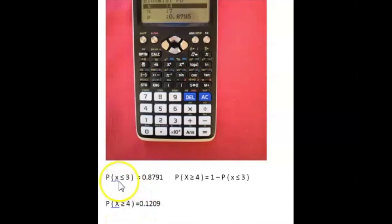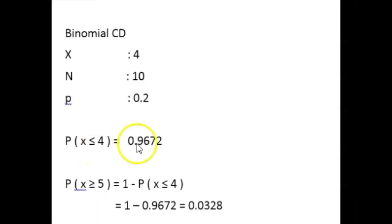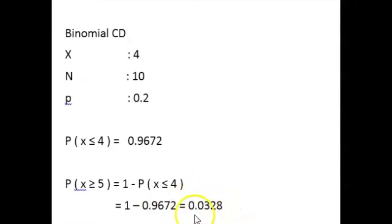So let's try a new value. The probability that X is less than or equal to 4 is 0.9672. Therefore, the probability that X is greater than or equal to 5 equals 1 minus 0.9672, which is 0.0328 — about 3%. This is less than or equal to 5%, which is what we require. So our critical region is X greater than or equal to 5.